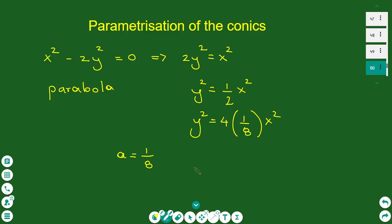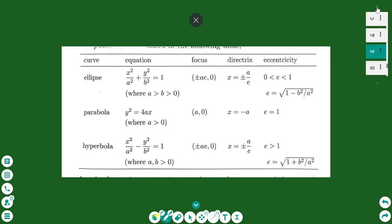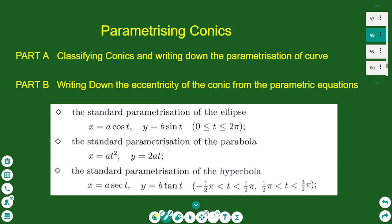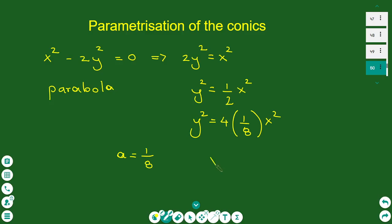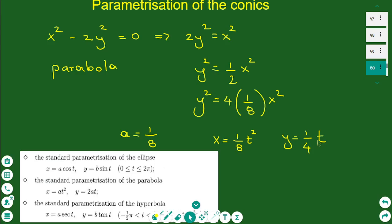Since this is a parabola with a = 1/8, the parametric equations are x = at², y = 2at. Therefore x = (1/8)t² and y = 2 · (1/8) · t = (1/4)t.